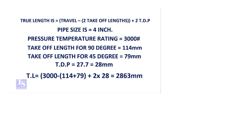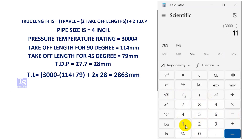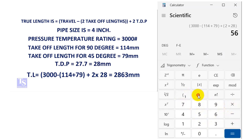Now let's calculate. True length equals 3,000 minus 2 × 114 plus 2 × 28, which equals 3,000 minus 228 plus 56, equal to 2,828 millimeters. So the true pipe length is 2,828 millimeters. Thank you for watching and have a great day!